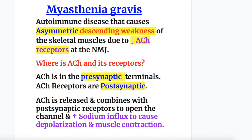Myasthenia Gravis is an autoimmune disease that causes asymmetric descending weakness of the skeletal muscles due to a decrease in acetylcholine receptors at the neuromuscular junction. There is asymmetric descending weakness due to decreased acetylcholine receptors at the NMJ.